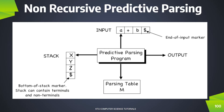If we have a production A gives BC, where B is a non-terminal, then we add these two symbols onto the stack. When we process the terminal symbols and non-terminal symbols, we will proceed with the parsing.